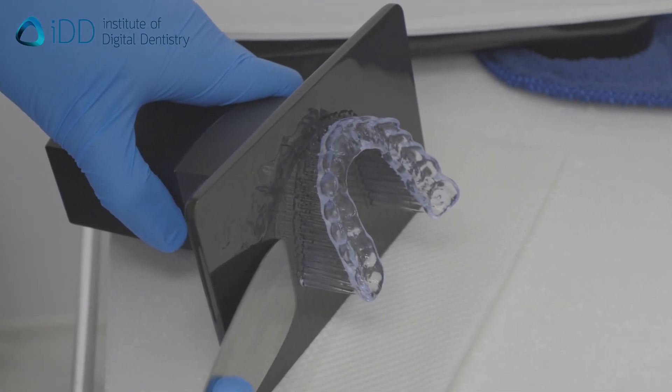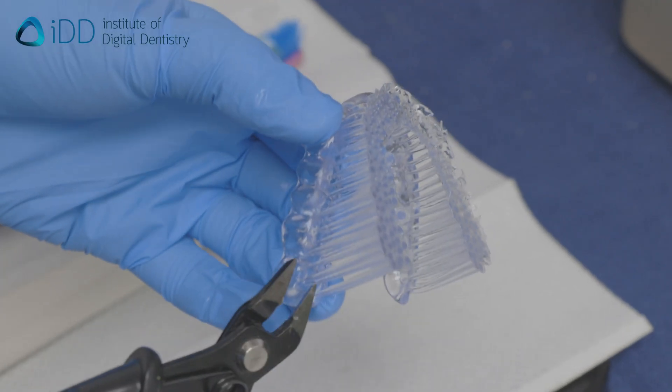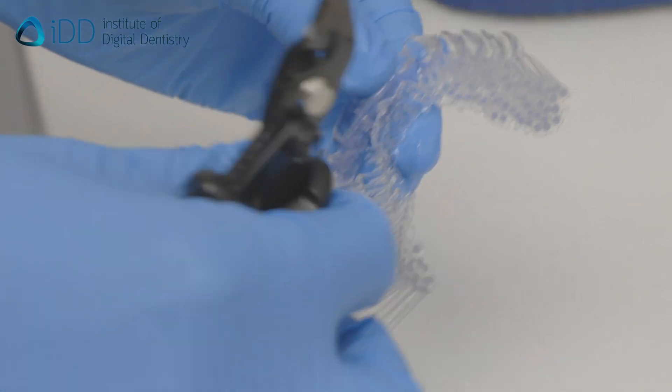Once the splint has been printed, remove the splint from the base using a spatula. Remove the sprues and connectors using a plier. As you can see, with this particular resin, they break off easily.